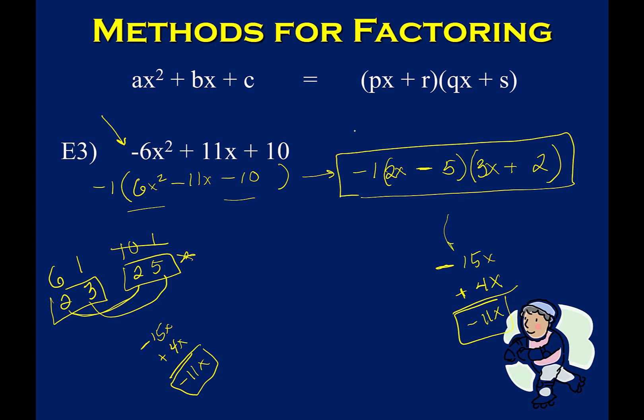Notice that I didn't get rid of that negative 1 — it's still there. Just like when you remove any other GCF, it needs to come along through the rest of the problem. Whatever you write needs to be able to multiply together to give you the original problem, so you can't lose pieces of information.